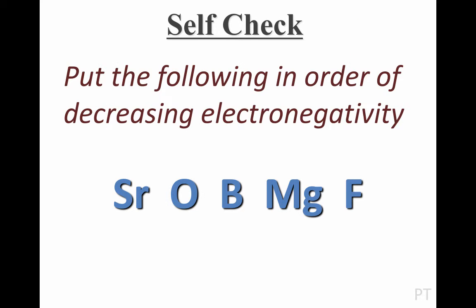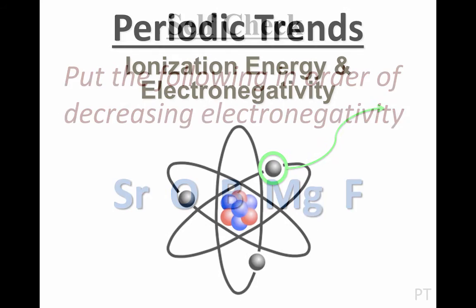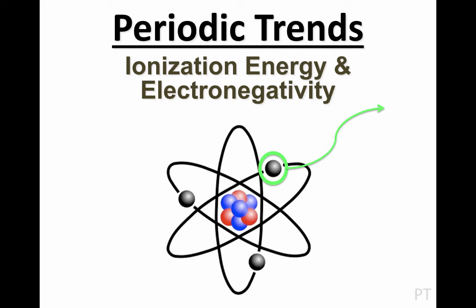We'll wrap this lesson up with a quick check: put these elements in order of decreasing electronegativity, with the most electronegative element first and the least electronegative element last. Fluorine is first, followed by oxygen, then boron, which is higher than magnesium, and then the least electronegative element on the list, strontium. I hope you learned some new things about ionization energy and electronegativity, and that these words aren't so scary anymore. I also hope you learned how to determine these properties based on where elements appear on the periodic table. Good luck as you complete your periodic trend assignments.